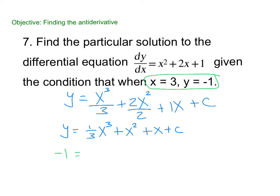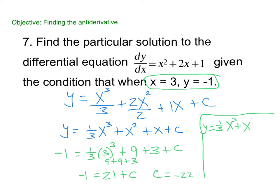Now I'm going to take my x and my y and plug in so I can solve for my C. Negative 1 equals 1/3 times 3 to the third, plus 9 plus 3 plus C. So let's see, that's 9 plus 9 plus 3, 18, 21 plus C is negative 1. So I got C is negative 22. So my final answer is y equals 1/3 x cubed plus x squared plus x minus 22. Done.